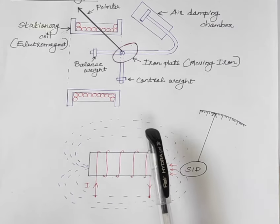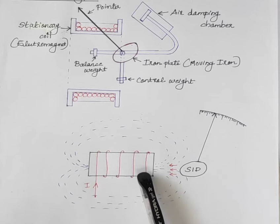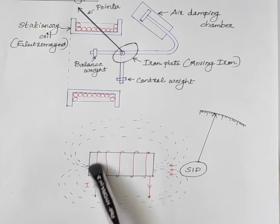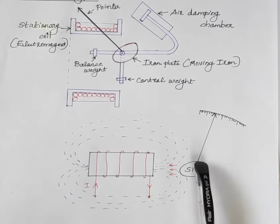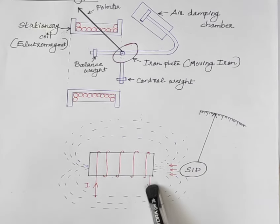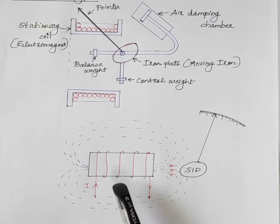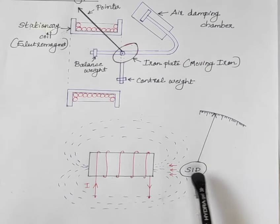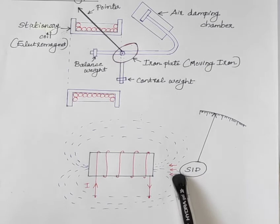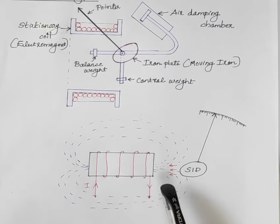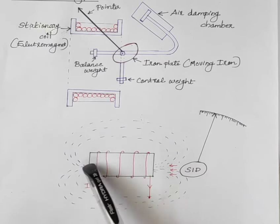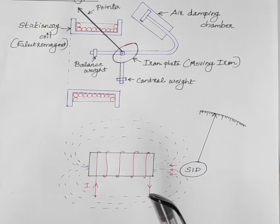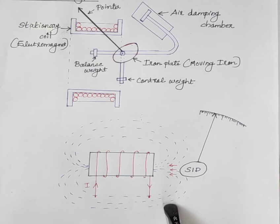The basic principle behind the working of the moving iron instrument is the force between the current carrying coil and the soft iron disc. When current passes through the coil, it acts as an electromagnet. When a piece of soft iron is placed near to this coil, it will be attracted by the coil. This force of attraction depends on the strength of the magnetic field, and this magnetic field strength depends upon the magnitude of current passing through it.